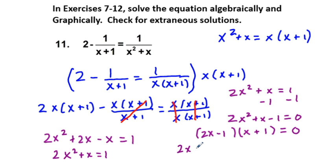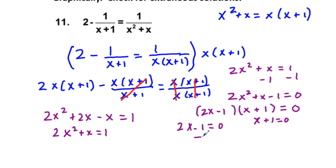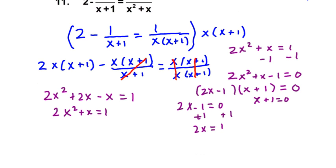We set the left factor equal to 0: 2x minus 1 is equal to 0, and x plus 1 is equal to 0. Solving our equations — adding 1 to the left equation gives 2x equals 1, so dividing by 2, we have x equals 1 half. That's one of our solutions. On the right equation, subtracting 1 gives x is equal to negative 1. So those are our two solutions.